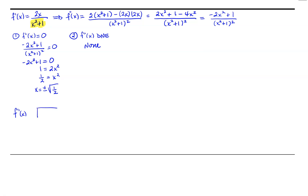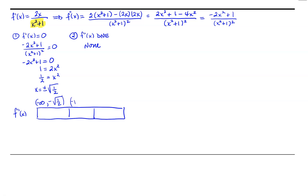Since there are 2 critical numbers, this will divide our x-axis into 3 intervals: from negative infinity to negative square root of 1/2, from negative square root of 1/2 to positive square root of 1/2, and then from positive square root of 1/2 on to infinity. We'll go ahead and choose a value from each one of those intervals.